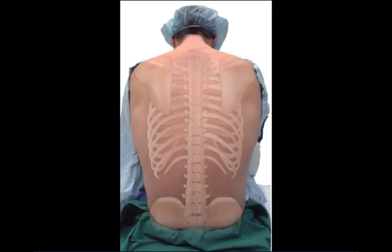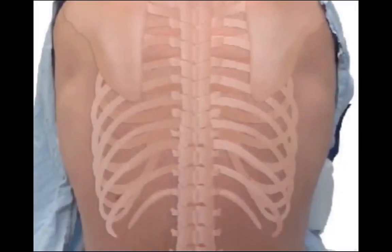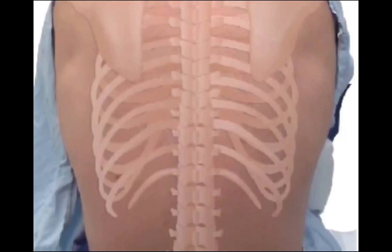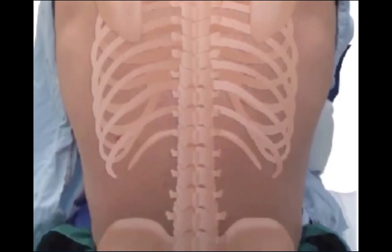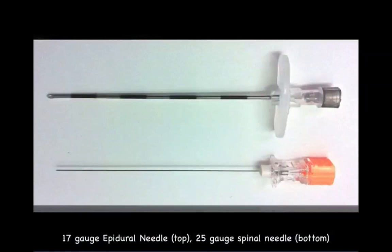Epidural anesthesia may be performed at the cervical, thoracic, and lumbar levels. Flexion of the spine distracts the spinous processes, which increases the distance between them and facilitates access to the epidural and spinal space. An interspinous space that corresponds to the mid to upper level of the surgical incision is chosen for insertion of the epidural needle.